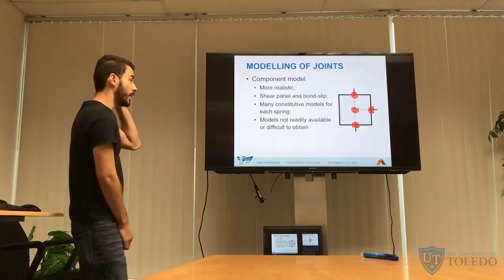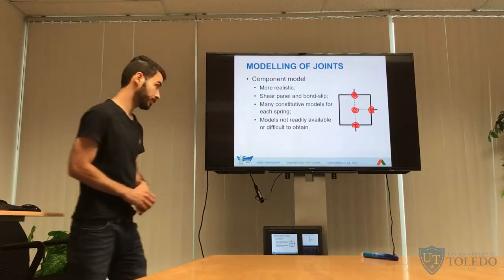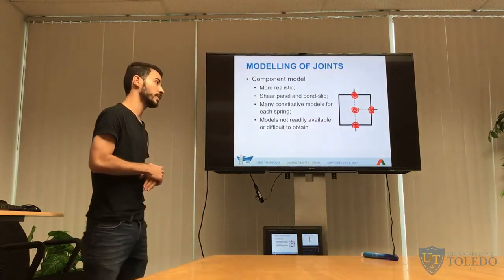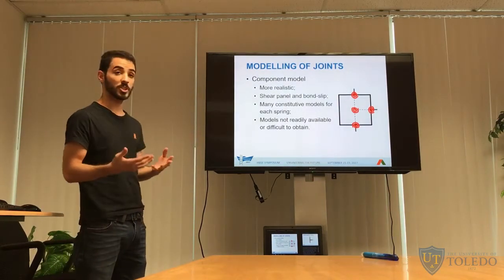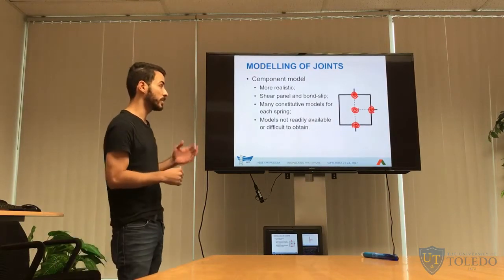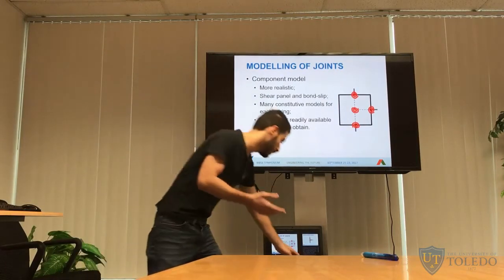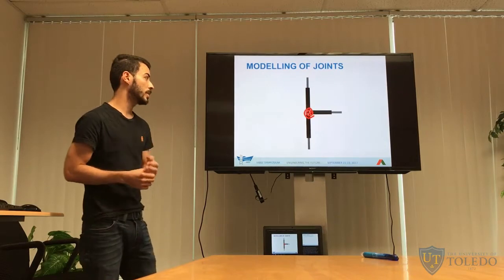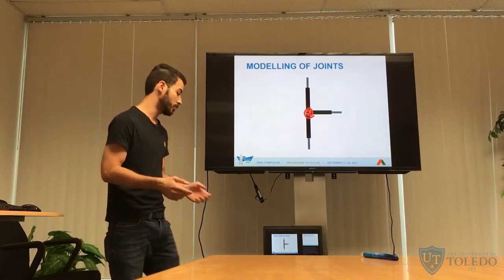The component model is the most realistic of the three. It can simulate both shear panel and bond slip using many springs at all faces of the beam-column joint. However, because it uses so many springs, it requires a constitutive model for each, and those models are not readily available or well-documented, making it quite hard to apply to a specific case. Although more realistic, it's not practical for real applications. For this study, we use the simpler rotational hinge model due to its simplicity and because bond slip is not a critical failure mechanism in the frame studied.